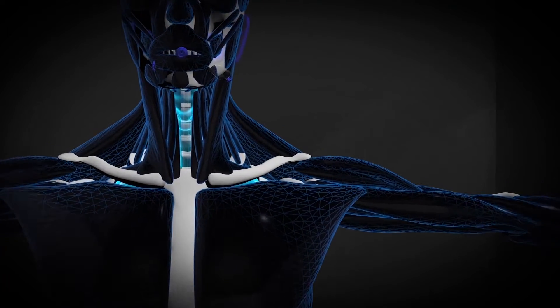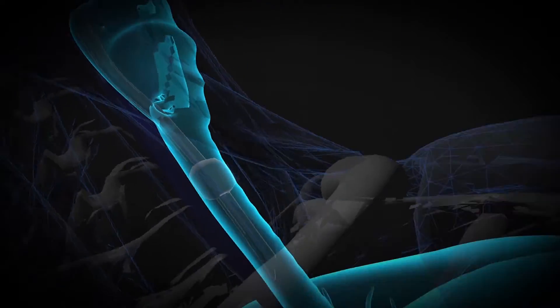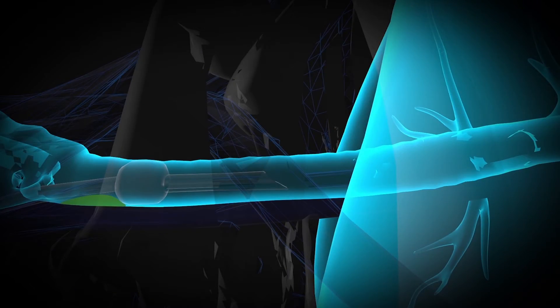Endotracheal tubes are commonly used in the ICU. Secretions accumulated above the balloon cuff can shift depending on the patient's position, flat or semi-recumbent.